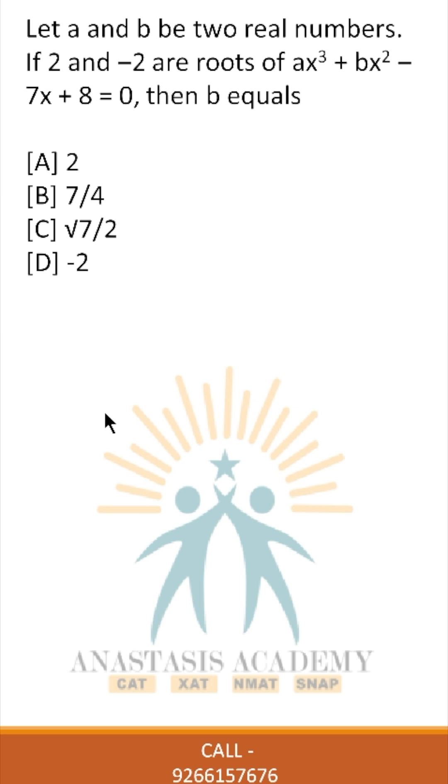Let a and b be two real numbers. If 2 and -2 are roots of ax³ + bx² - 7x + 8 = 0, then b equals. All you have to do is plug in 2 into this.